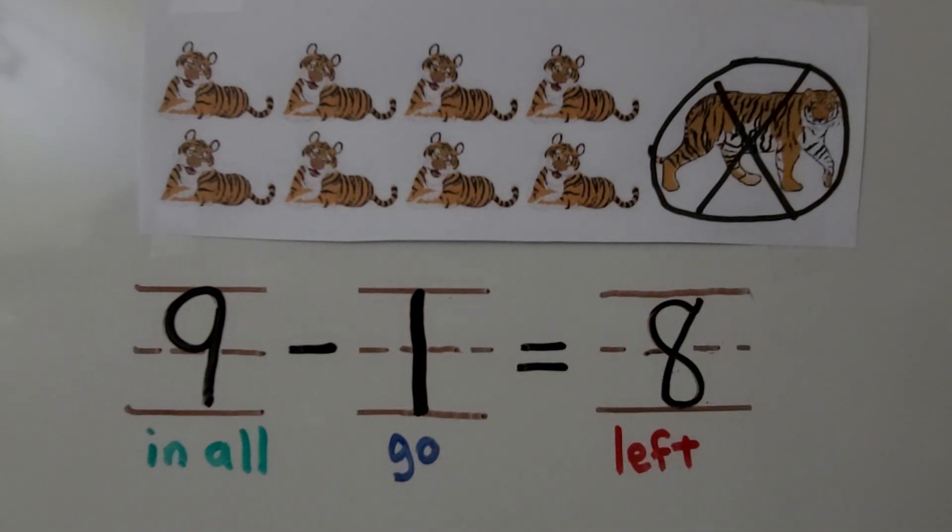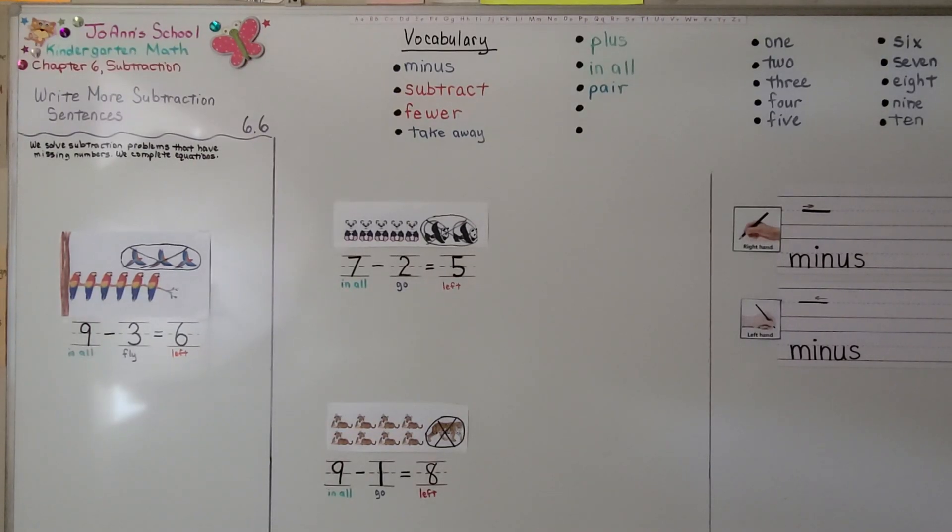So in a subtraction equation, the number that is crossed out is the number that's being taken away. The number that's left is the number of objects that's not crossed out.